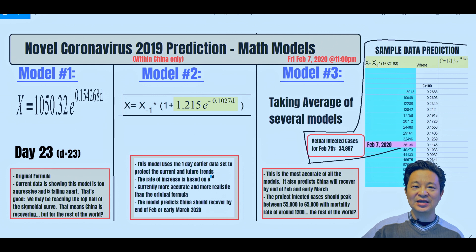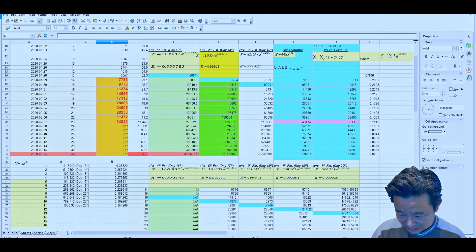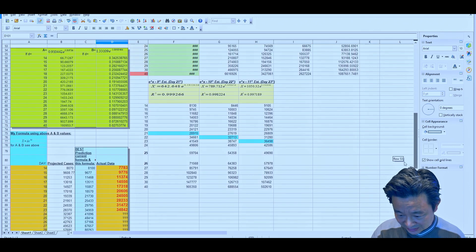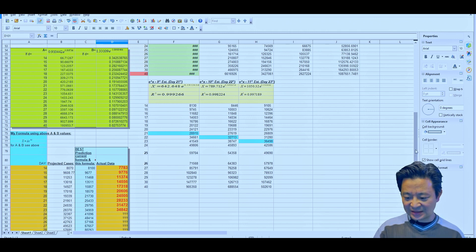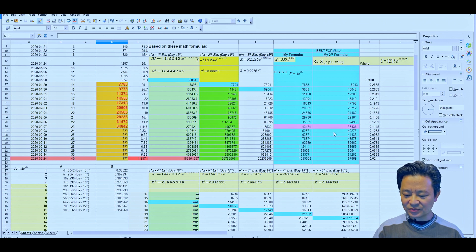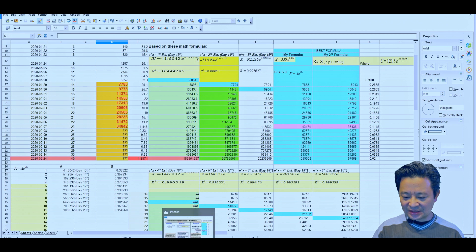The first model, the original one, is actually breaking apart, which is good news. It's showing that China is recovering and the exponential power is decreasing, forming almost a linear pattern. Currently the formula is 1050.32 times e to the exponent 0.154268 times day. Today's day 12 and it predicts about 36,498 cases.